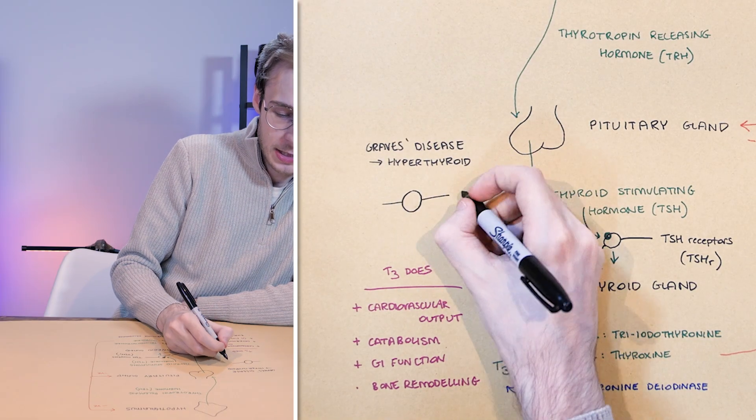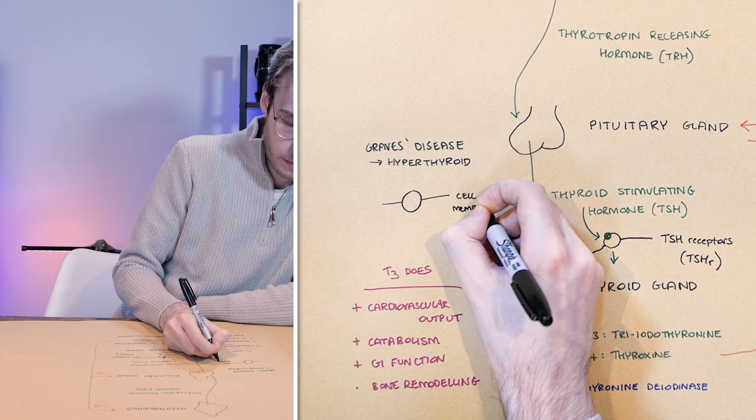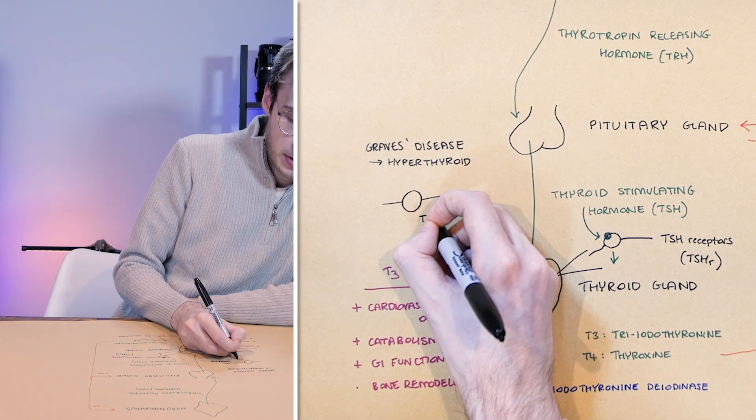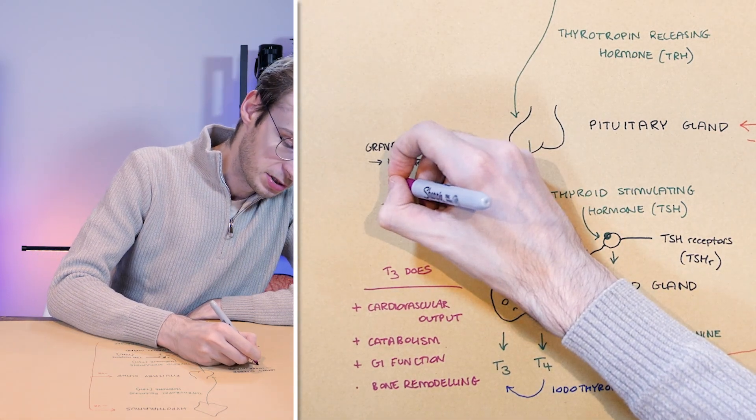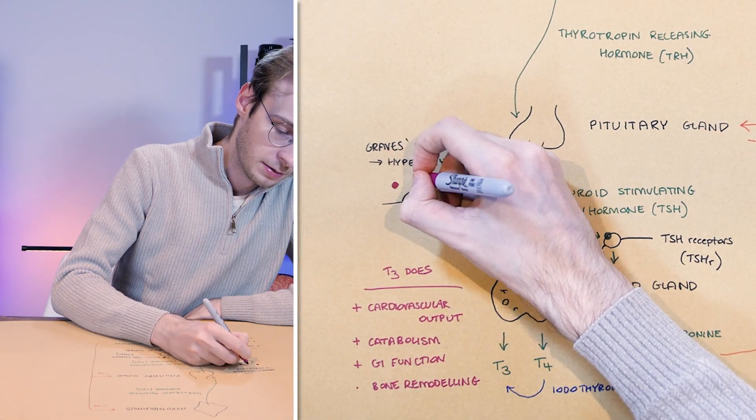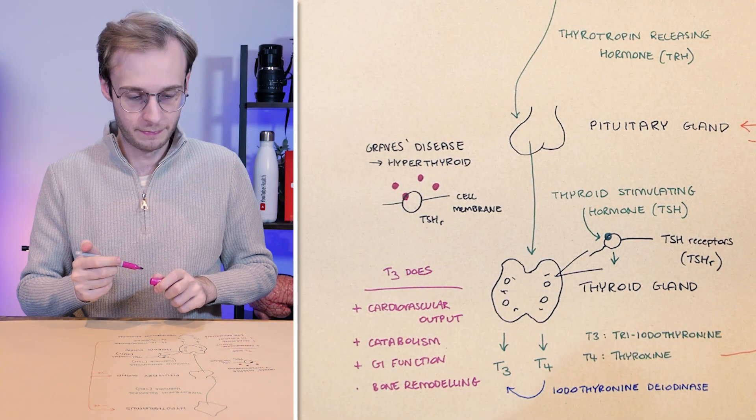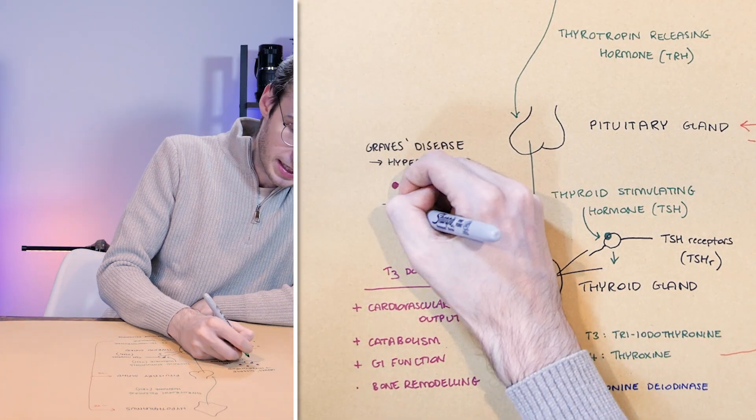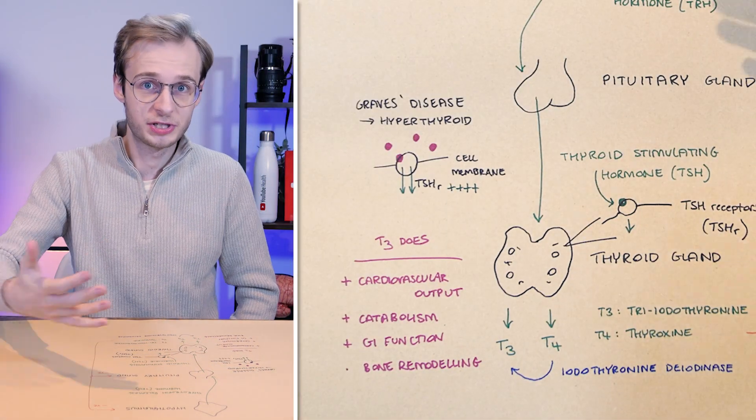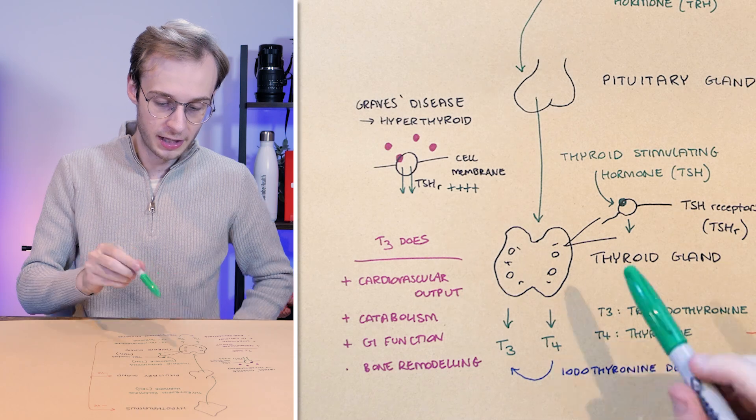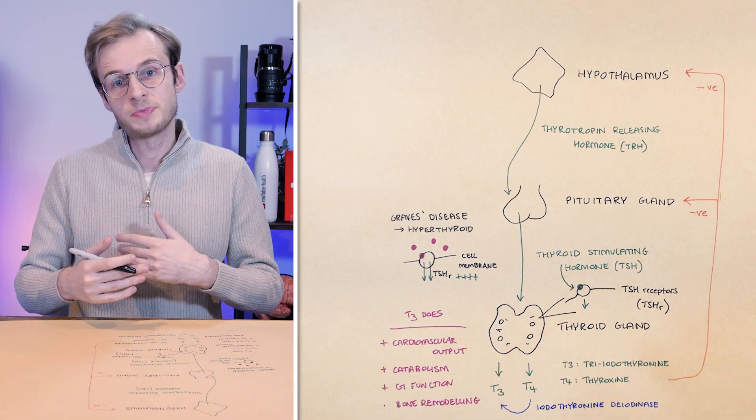But what happens in Graves' disease, if this is our cell membrane and this is our TSH receptor, what happens is for various reasons you develop antibodies, which are circulating around and bind to the TSH receptor. And because these antibodies bind to the receptor and don't let go, it's constantly firing off. Regardless of how much negative feedback is going on, the only thing the thyroid gland cares about is that this receptor is active. And this causes people to enter a hyperthyroid state,